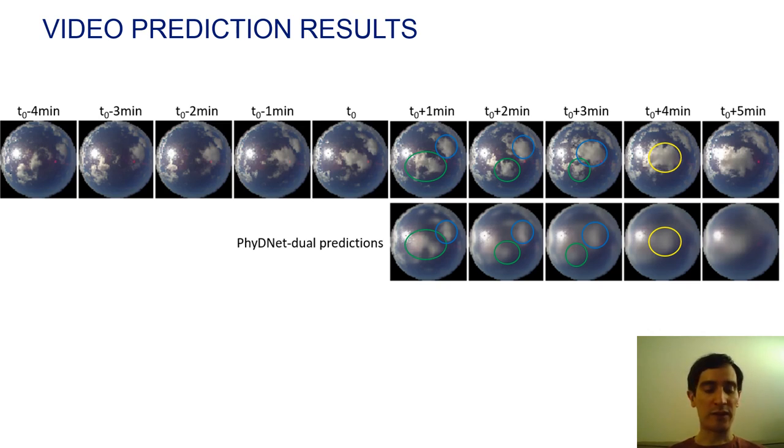And even if the PhyDNet-DRAWL predictions are a little bit blurry, we observe that the model is able to predict this behavior. So it confirms the benefits of our physically-constrained prediction.